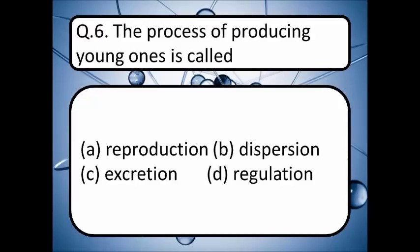The process of producing young ones is called — read your options A, B, C, or D. Write down the correct option in the comment box. The correct answer is option A — reproduction.